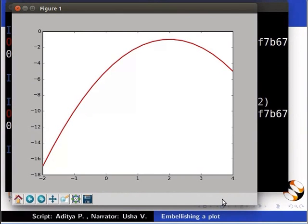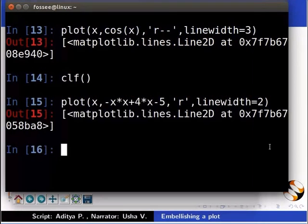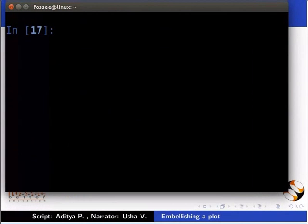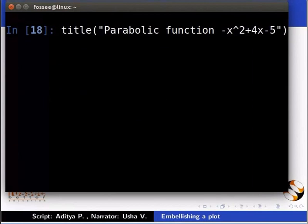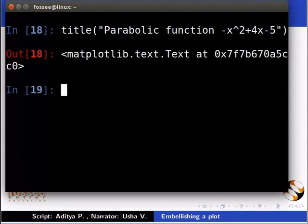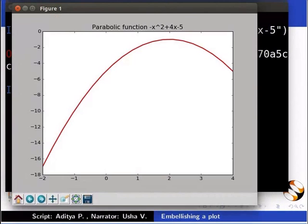But the figure does not have any description describing the plot. To add a title to the plot, use the title command. So type title inside the brackets inside inverted commas parabolic function minus x square plus 4x minus 5. The title command as you can see takes a string as an argument. We can see the title on the plot window. But it is not formatted and does not look clean.